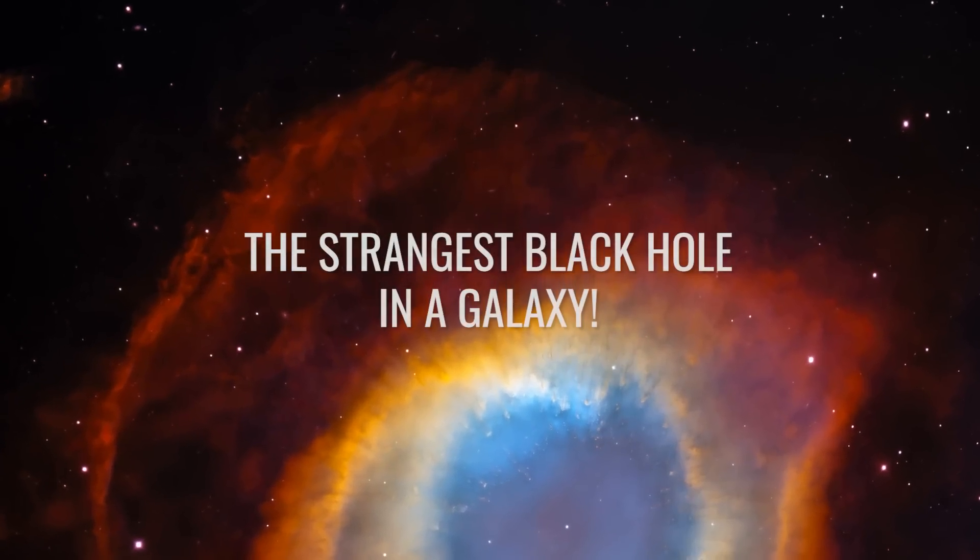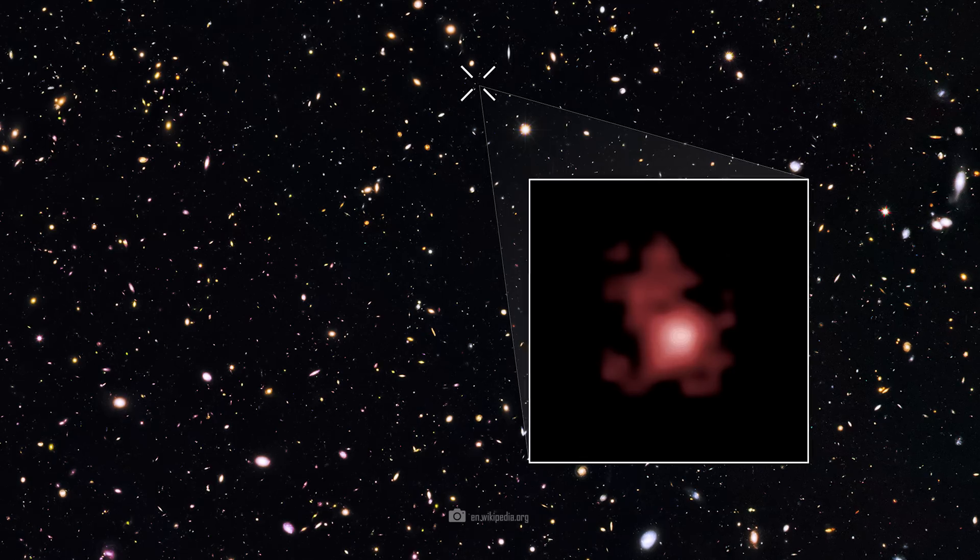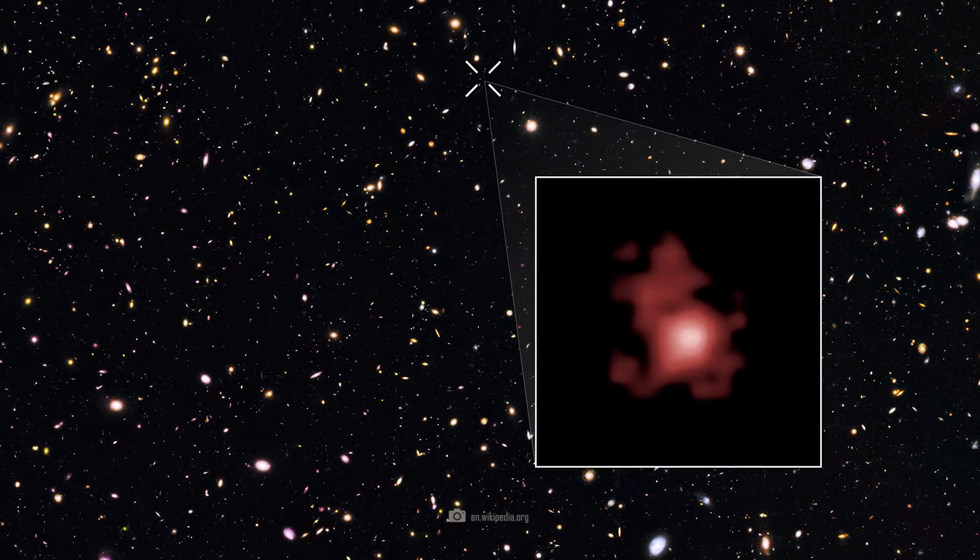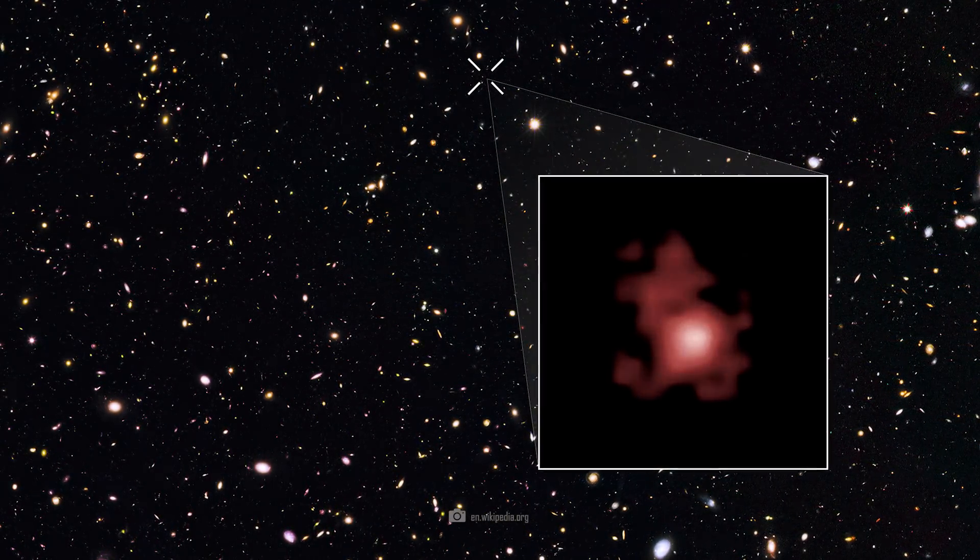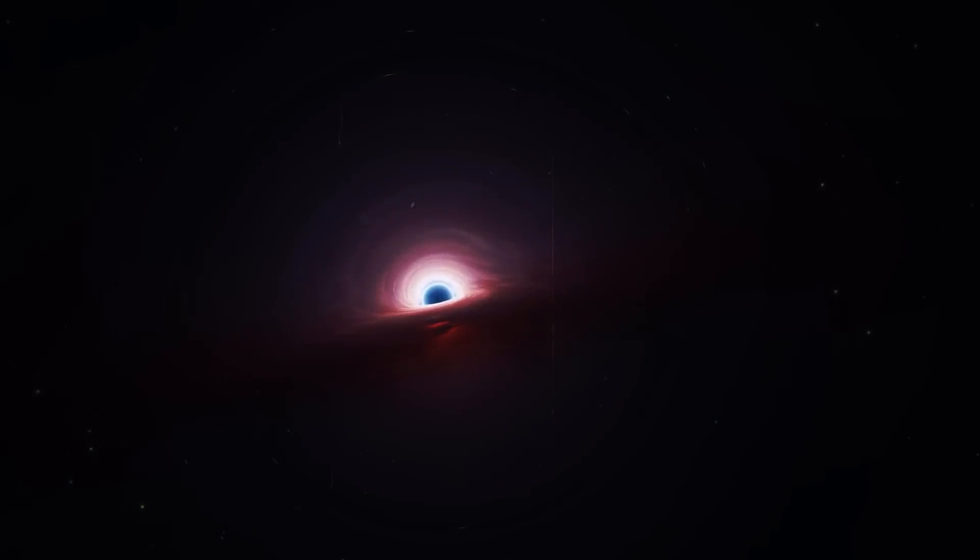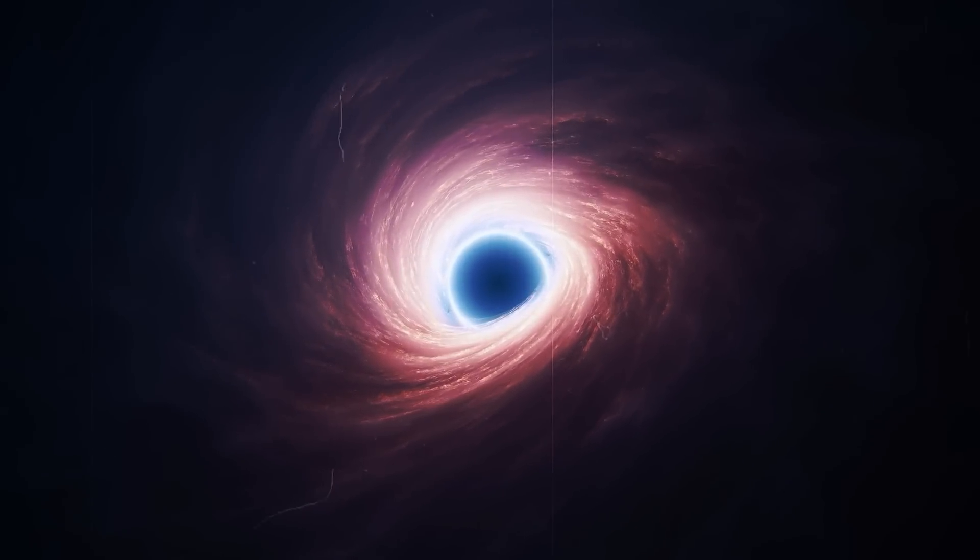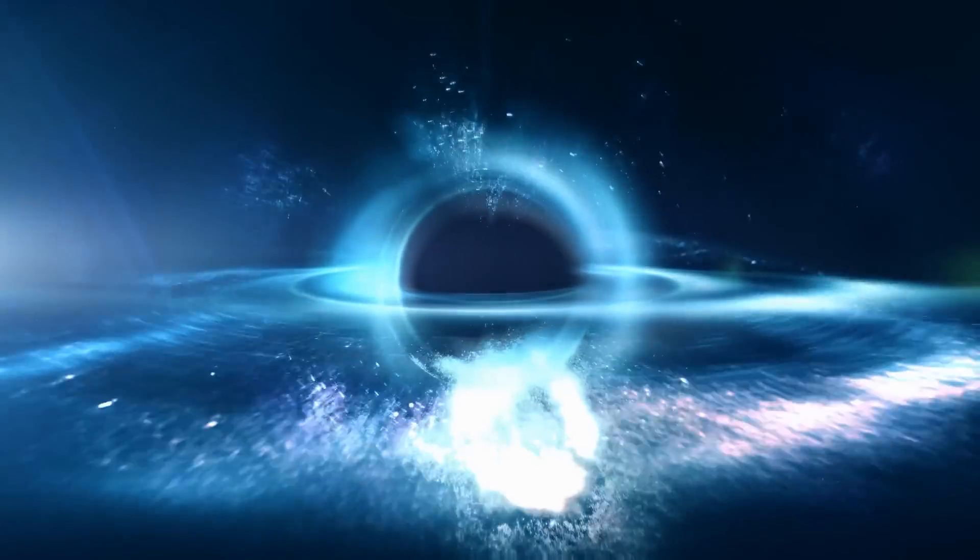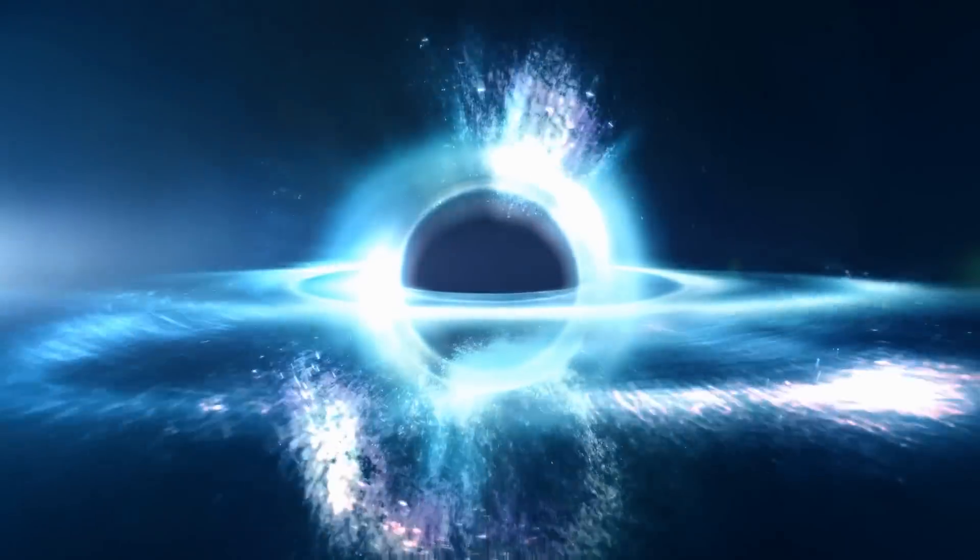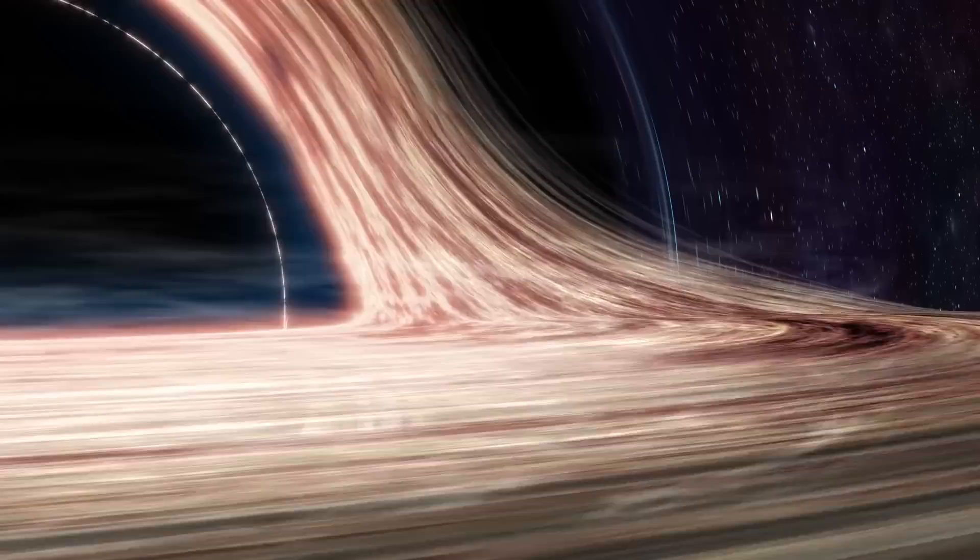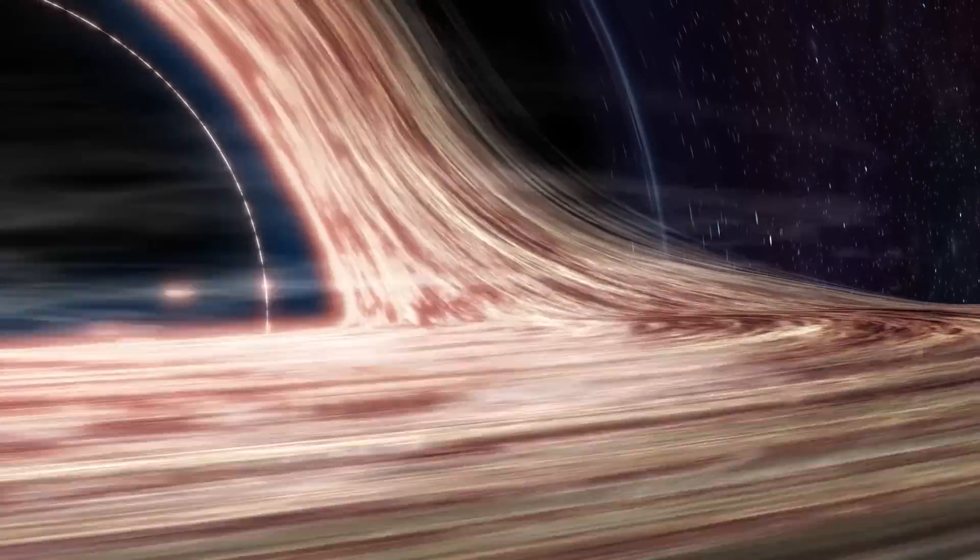Let's take another closer look at the galaxy GN-Z11, which existed about 400 million years after the Big Bang. A supermassive black hole has been identified at its center. This discovery once again raises many questions about the formation of such massive objects in the earliest epochs of the universe. The presence of such a large black hole at such an early stage contradicts previous theories.